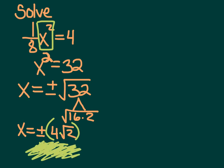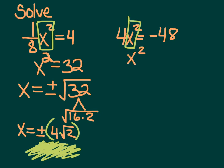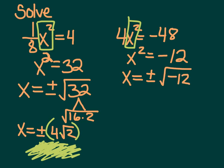Here's another example. We need X squared by itself, so divide both sides by 4. Negative 48 divided by 4 is negative 12. So X equals plus or minus the square root of negative 12, which is 2i root 3. So X equals plus or minus 2i root 3.